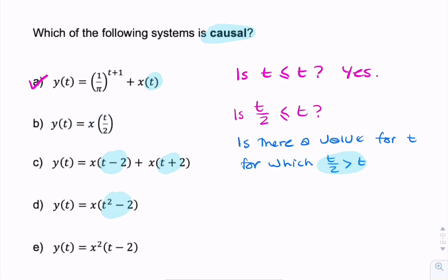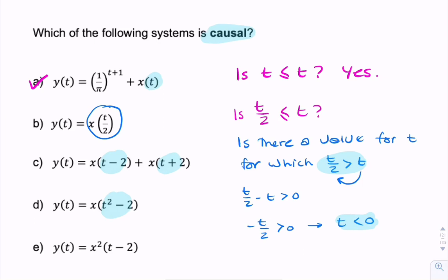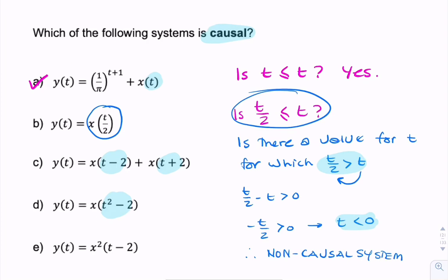Let's try to solve this. Bring t to the other side: t over 2 minus t is greater than 0, so minus t over 2 greater than 0, so t less than 0. This shows us that for all negative time, x of t over 2 would actually be a future value. Therefore, it's a non-causal system — we found a range of values for t for which this would not hold. So to answer the original question: is t over 2 always less than t? The answer is no. So it's non-causal.